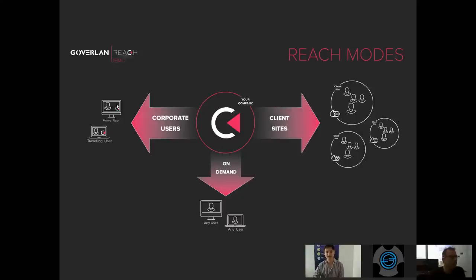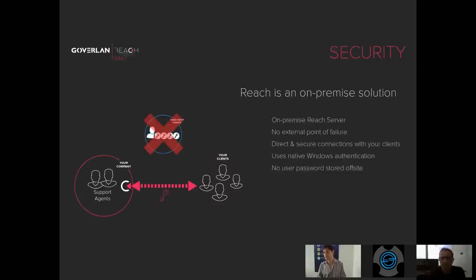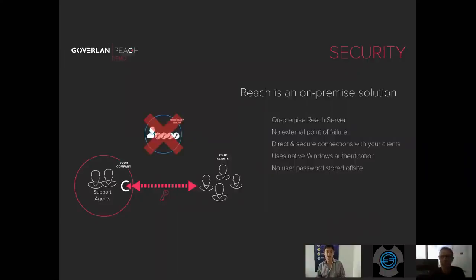This is a great lead into our last slide — security. This is entirely on-premises; there's nothing hosted at Goverland. At no point are you pinging off a server at Goverland. This is very different from other remote control solutions in this space. We are developed for the enterprise and secured by the enterprise. You package up this software, deploy it within your environment, secure it, and fully maintain it. Anything that goes wrong at our location has no effect on you. Anything that goes wrong at customer A's location has no effect on customer B — there's no external point of failure.